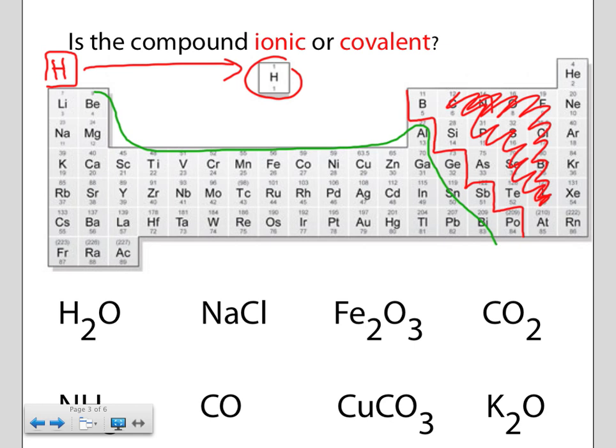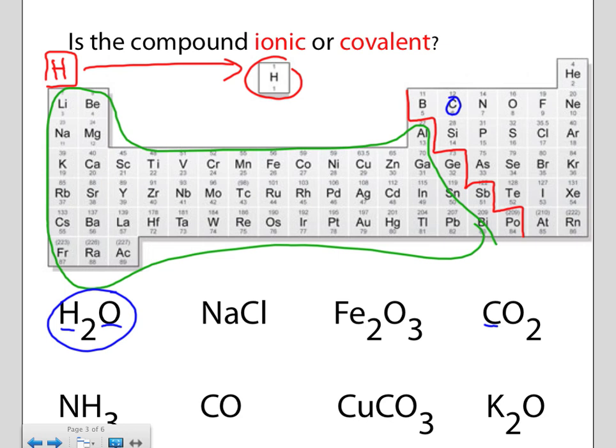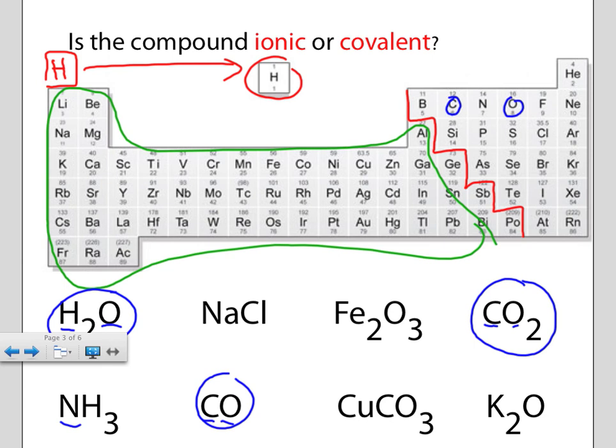If we look at these formulas, how would you classify these? Well, hydrogen — non-metal; oxygen — non-metal. So therefore, that's covalent. Carbon — non-metal. Here's carbon, here's oxygen — that is also covalent. Here's another example: carbon again, covalent. Look at this formula down here — nitrogen bonded with hydrogen. Both non-metals, so that is covalent.